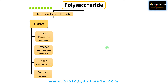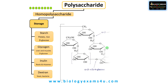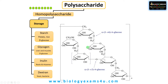The fourth storage homopolysaccharide is dextran, produced by bacteria and fungi. It is made up of glucose units linked by alpha-1,6 glycosidic linkage and also alpha-1,3 glycosidic linkage. Unlike starch or glycogen, it has a largely linear structure with very few branching points. It is used as a blood plasma expander and as a thickening agent in food and cosmetic industries.